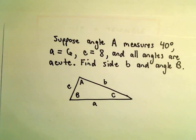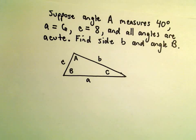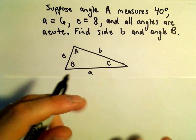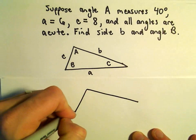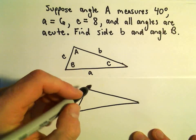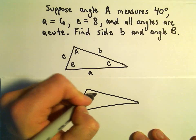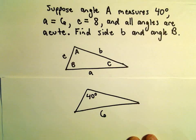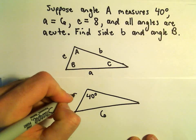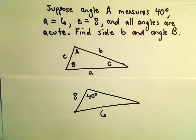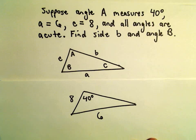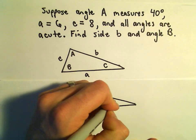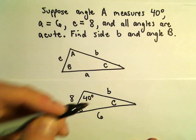I'm going to re-sketch this and fill in some of the values that we know. Angle A was 40 degrees. Little a was given to us as a length of 6. Side length c we said is 8, so obviously not quite to scale here. That's pretty much all that we're given — we don't know angle B, we don't know angle C, and we don't know little b.